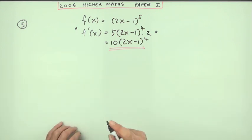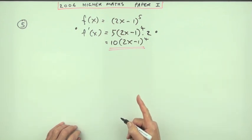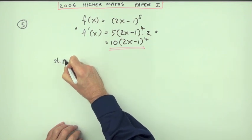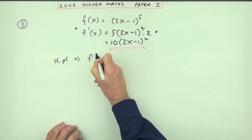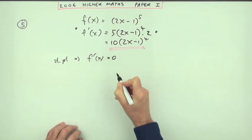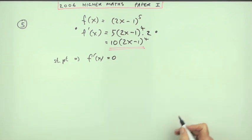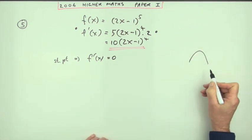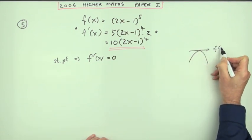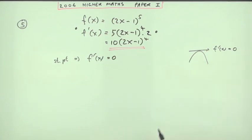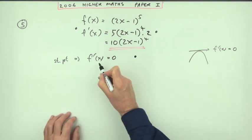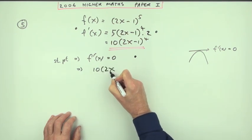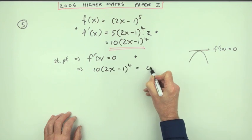The next part: how do you identify a stationary point? A stationary point means the gradient at that point has to be zero. No matter which type of point it is, the derivative equals zero — and that's worth a mark.